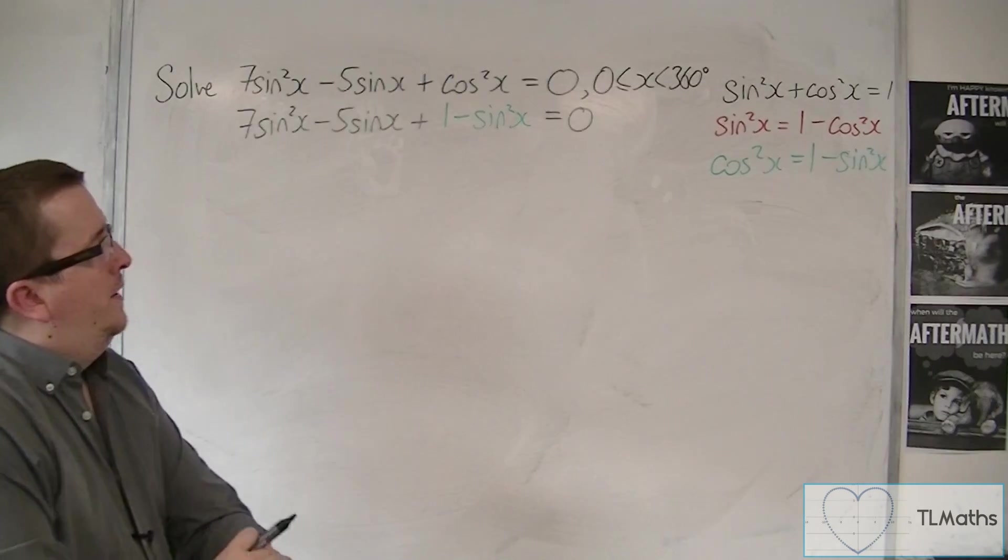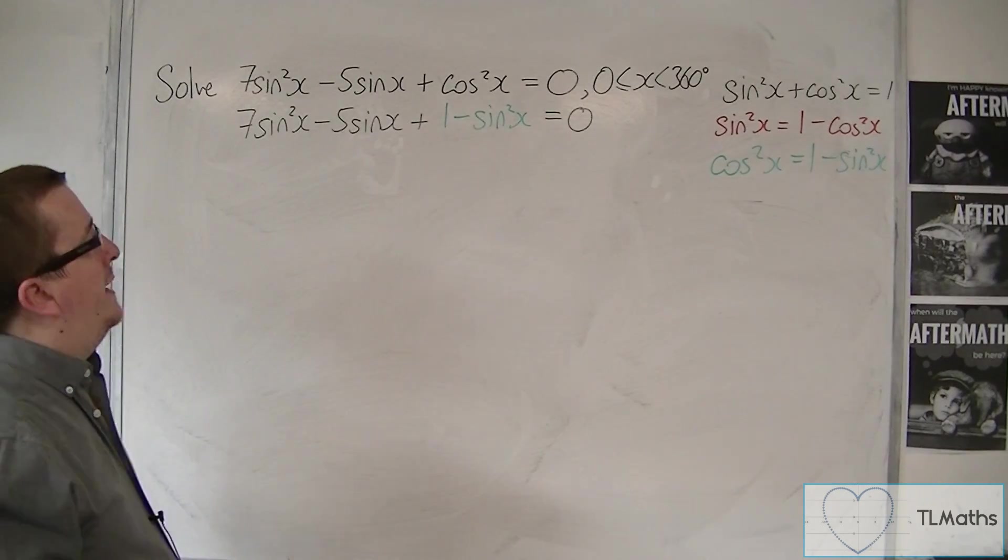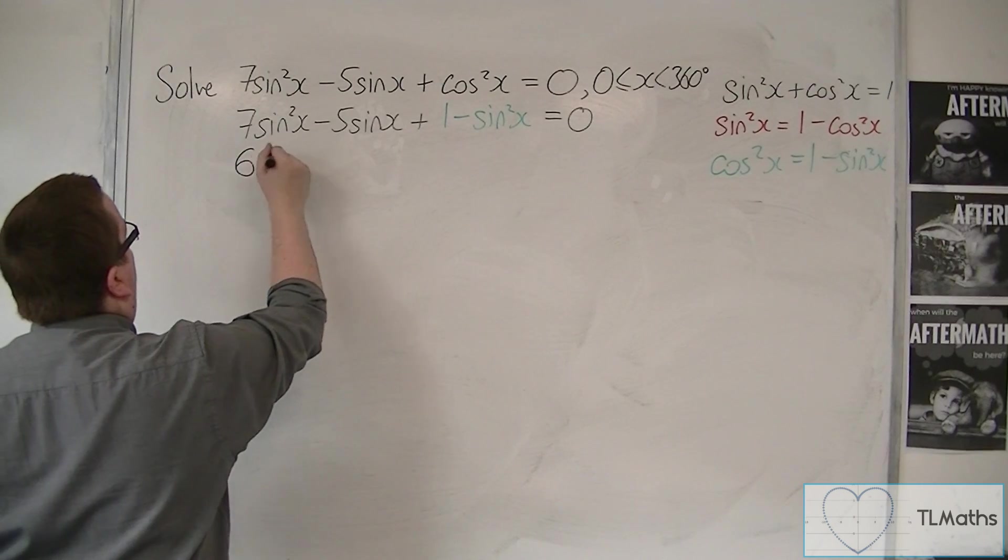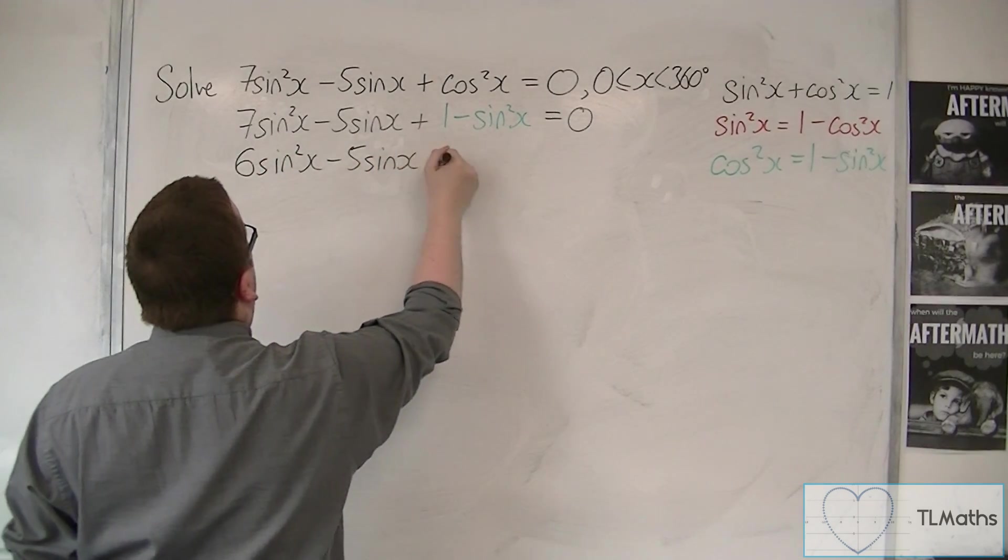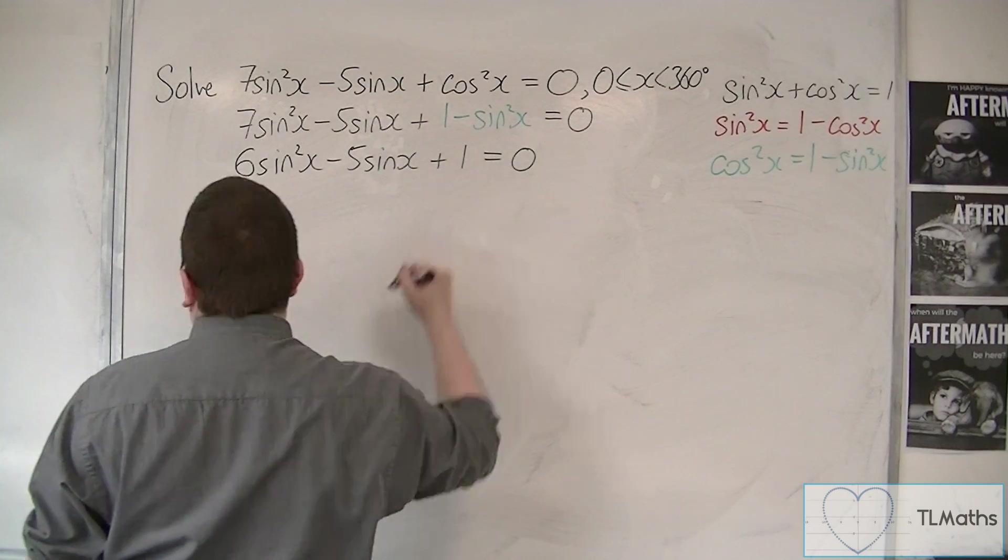That would be the replacement I would make. So I now have 6sin²x - 5sinx + 1 = 0.